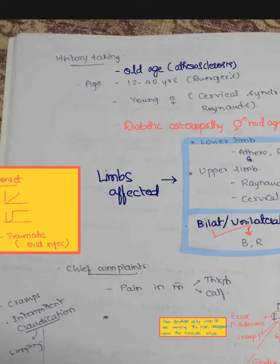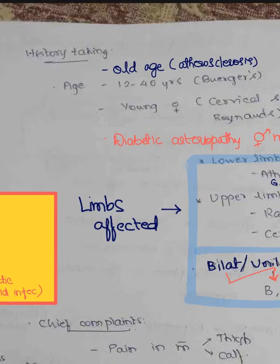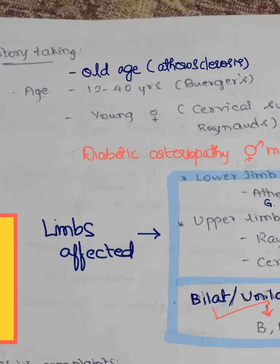This is about the examination of peripheral vascular disease and gangrene. In the history taking part, we first ask about the age. Atherosclerosis occurs in old age persons, while Buerger's disease occurs in 12 to 40 years of age. Young females usually encounter cervical syndrome as well as Raynaud's disease. Diabetic arteriopathy is seen in mid-age individuals, either males or females.